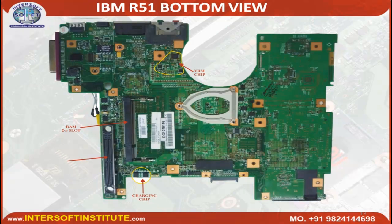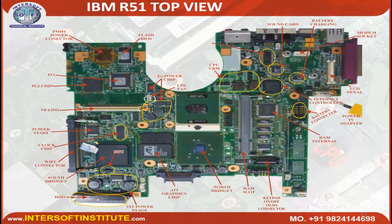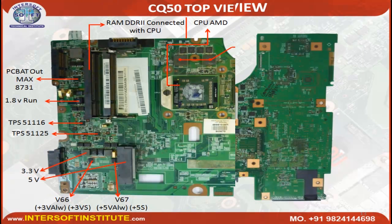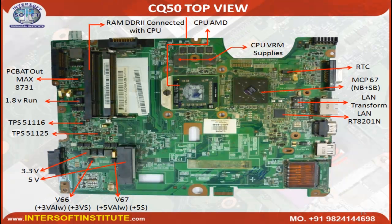This is the R51 bottom view and top view. The top view has the main components and the bottom has additional components. This is a single-chip CQ50 motherboard — it also includes the CPU. We are showing different boards so you can understand their concepts. This board has North bridge and South bridge combined ICs.